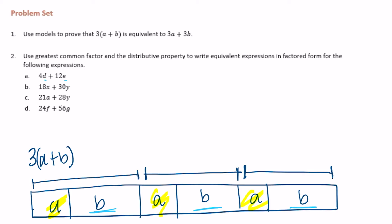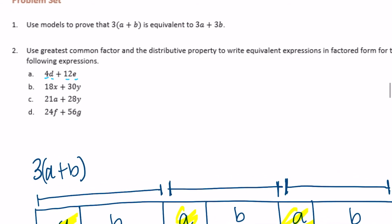They have different variables. So we're going to have to factor out 4 and 12. So 4 and 12 have a common factor of 4. So I'm going to factor out 4. If I factor out 4, 4d divided by 4 is just d. So we have basically 1d plus 12e. But I need to divide 12e by 4. So we get 3e. So 4 times d plus 3e.